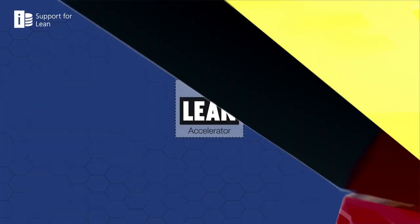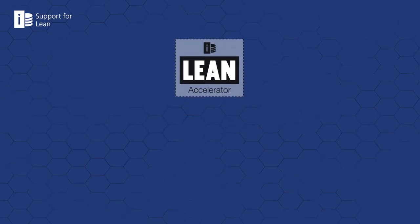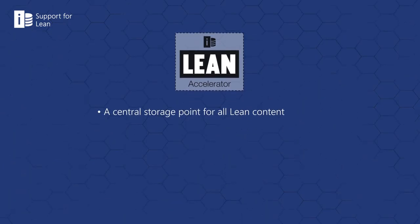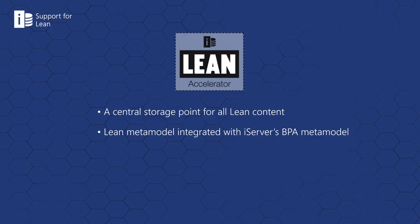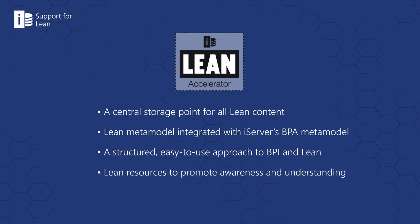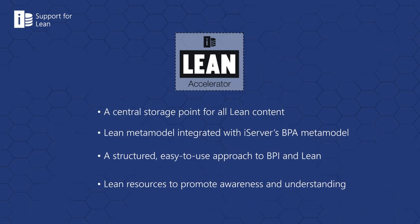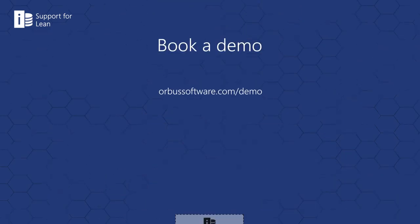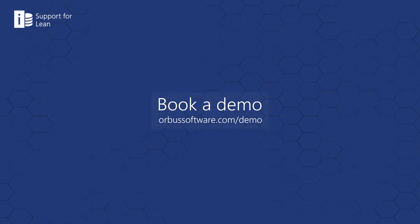In summary, the iServer lean accelerator incorporates a central storage point for all lean content, a lean metamodel integrated with iServer's BPA metamodel, a structured easy-to-use approach to BPI and lean, and lean resources to promote awareness and understanding. To discover how iServer and the lean accelerator can help your business deliver successful lean projects, book a half-hour demonstration with one of our consultants today.